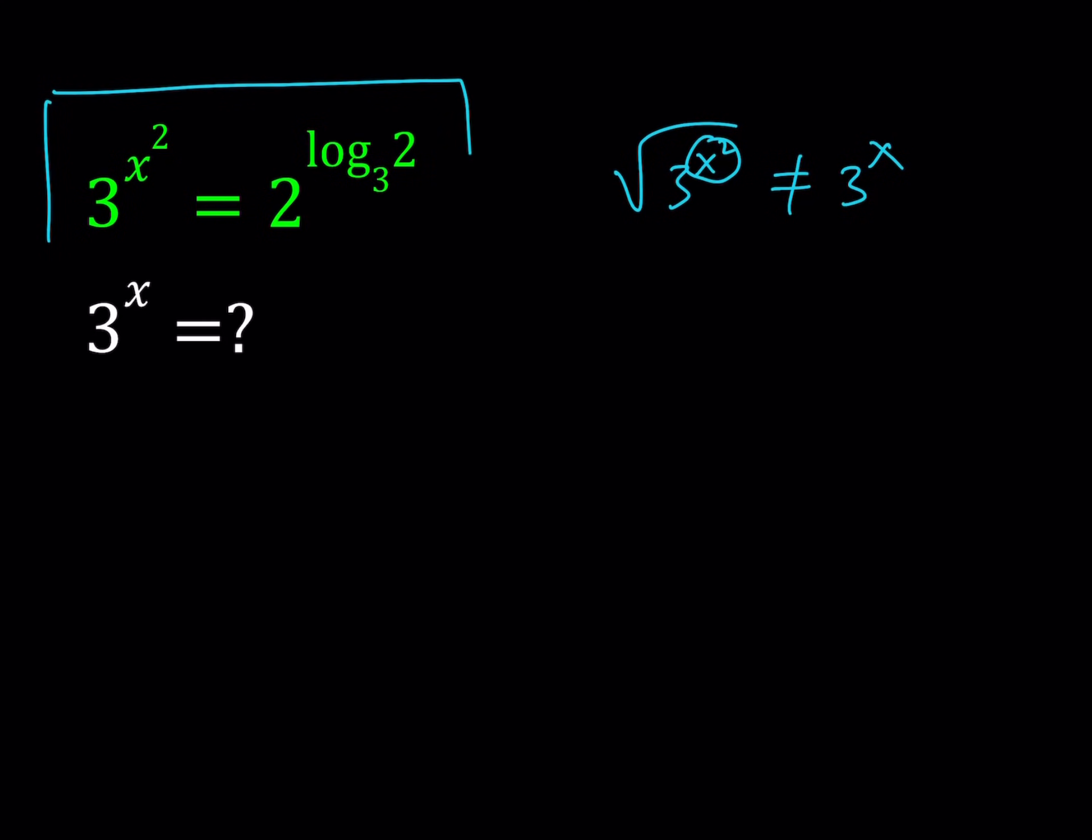First of all, we're going to simplify our original expression as much as we can, try to find x from there, and then we're going to substitute that into our expression. I'll be presenting one method. If you know of any other methods, please let me know in the comment section. Now, since I have a 3 on the left-hand side as our base and on the right-hand side I have a logarithm with base 3, it makes sense to use the logarithm base 3. So let's go ahead and log both sides, base 3.